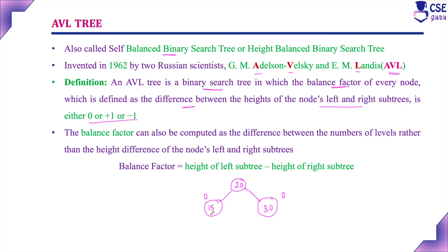Here the balance factor is 0. For this node: number of left subtree is 1, right subtree is 1, so 1 minus 1 equals 0. So if you consider all the nodes, the balance factor is 0 for all nodes. Suppose if we add one more node — it is still a binary search tree because the left subtree elements are lesser than the root node.